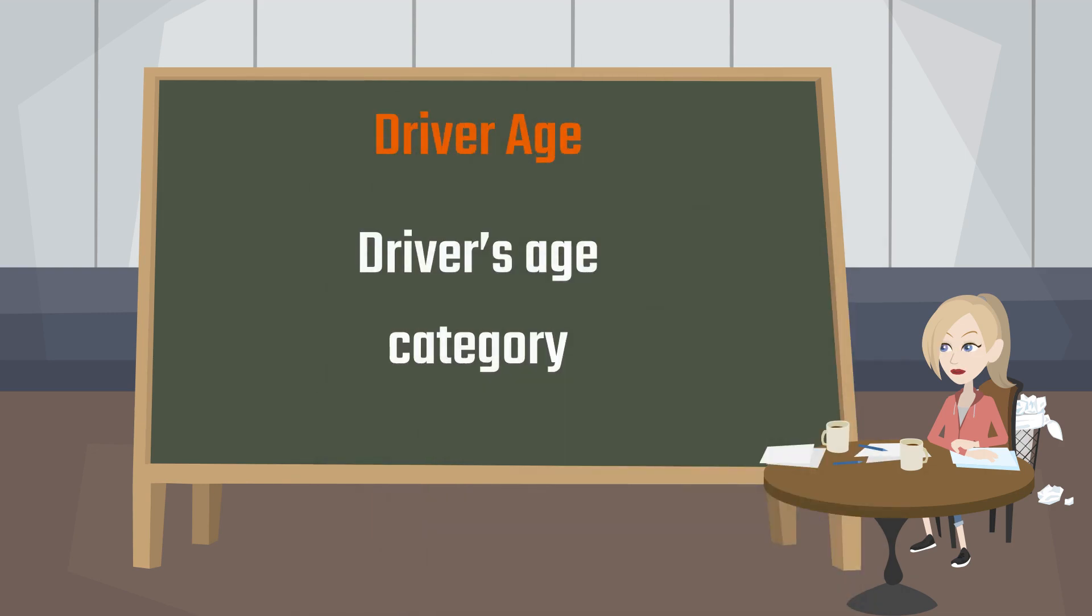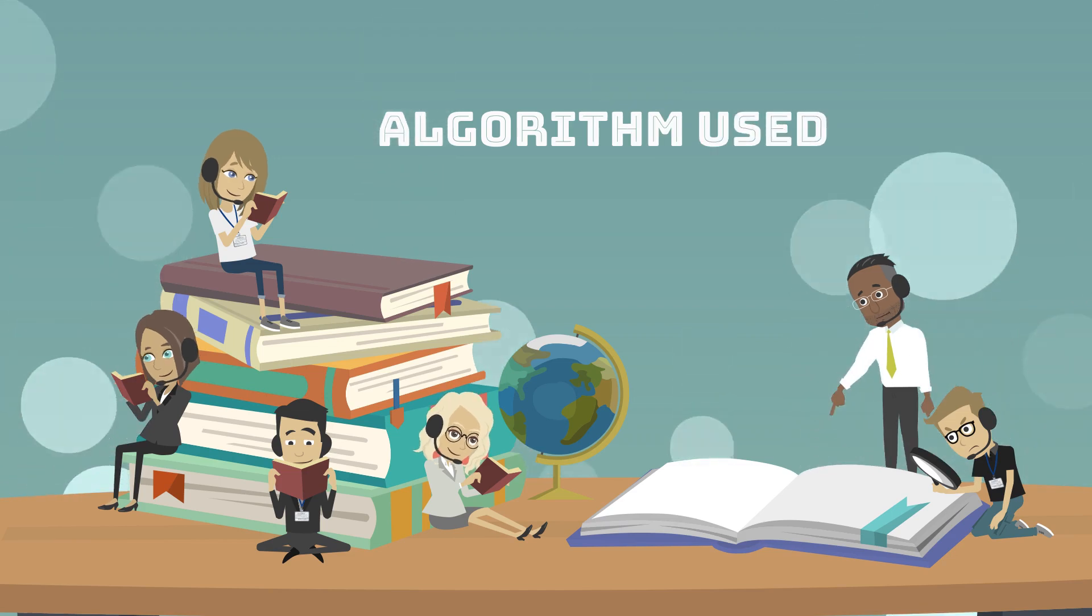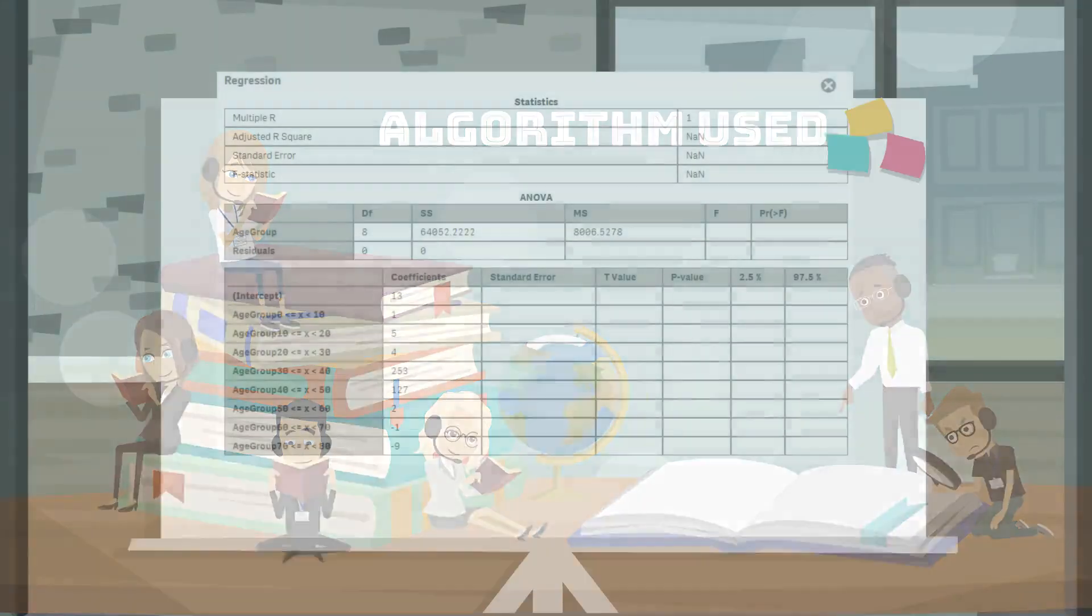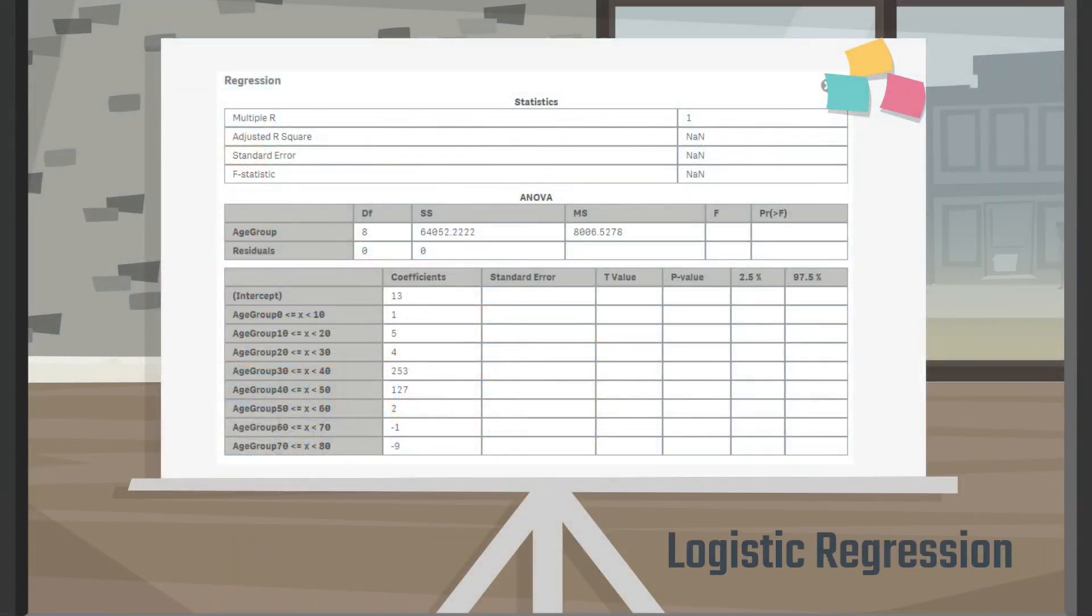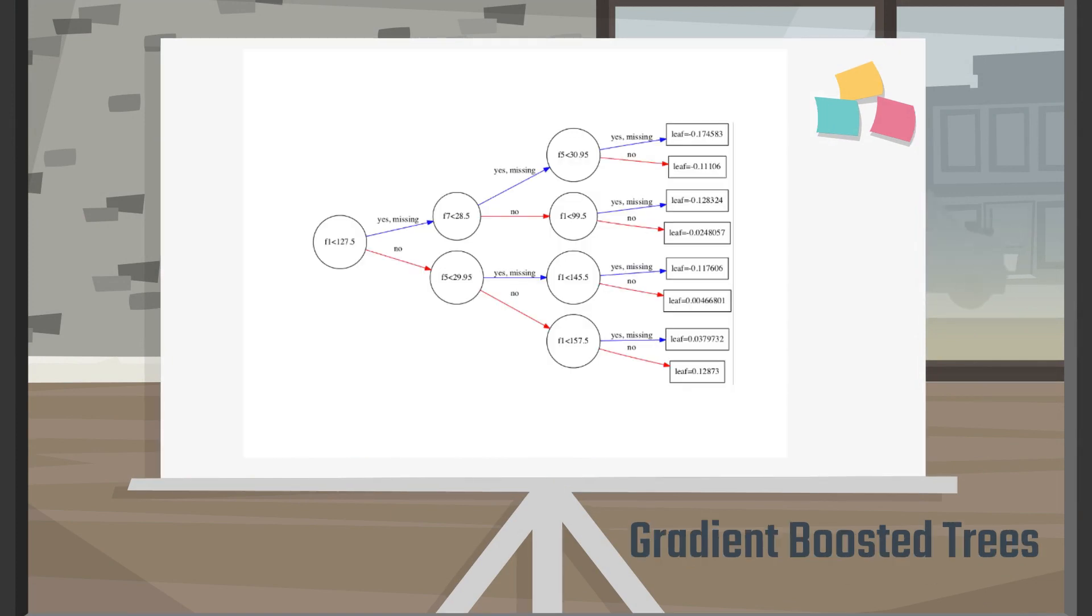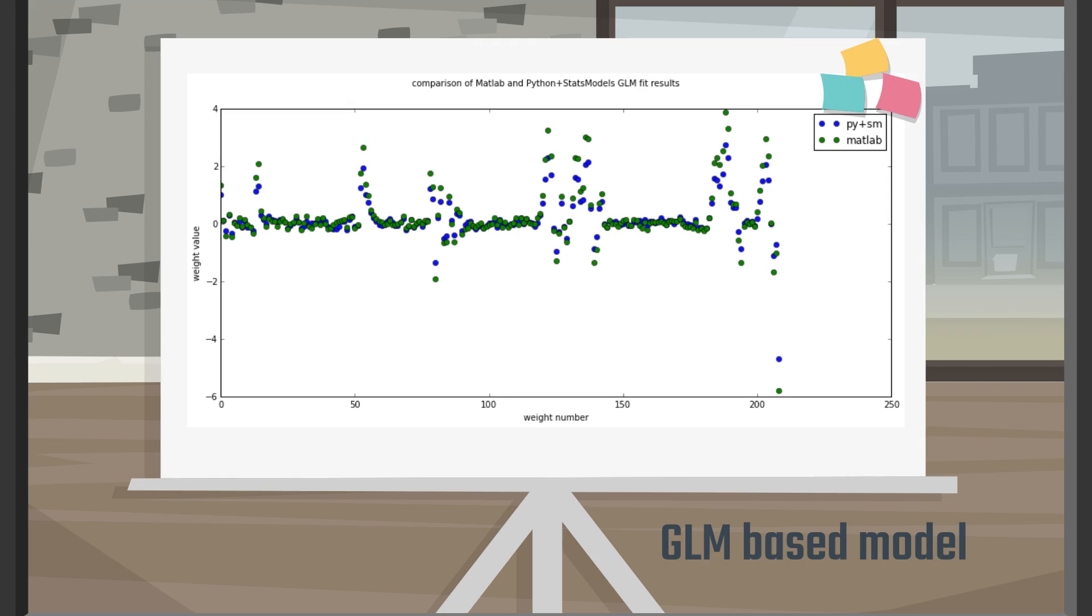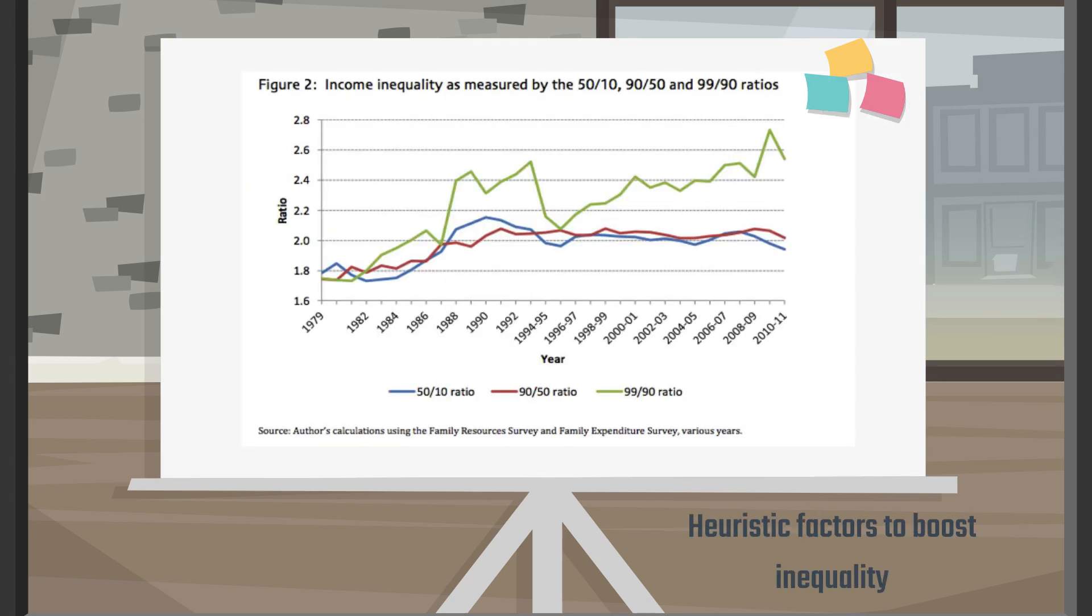Algorithm used: predict claim probability using logistic regression, predict claim value using gradient boosted trees, combining with the GLM-based model, heuristic factors to boost inequality.